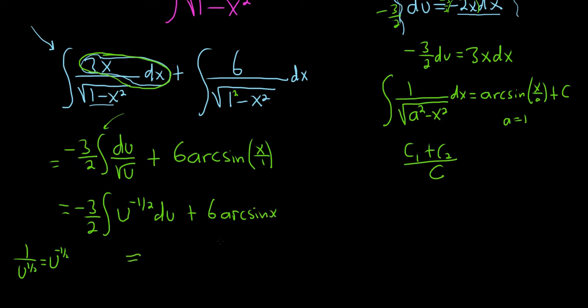So this is equal to, so now when we integrate this last integral, we definitely have to write the plus c. So it's negative 3 halves, u, we're adding 1, so 1 plus negative 1 half is 1 half. When you divide by 1 half, you really multiply by 2. And then we still have our 6 arcsine x. And now finally it's been bothering me, we can write that plus c.